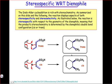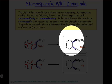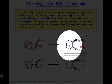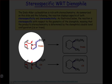Importantly, the absolute stereochemistry of the reaction is uncontrolled in the absence of some chiral ligand or other chiral influence. So we'll see either this compound or its enantiomer as the product of the Diels-Alder reaction between these two substrates.